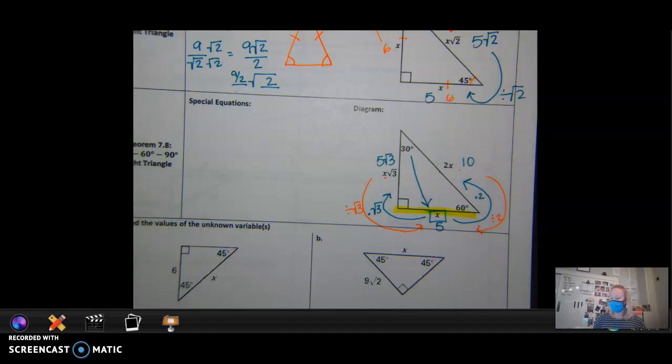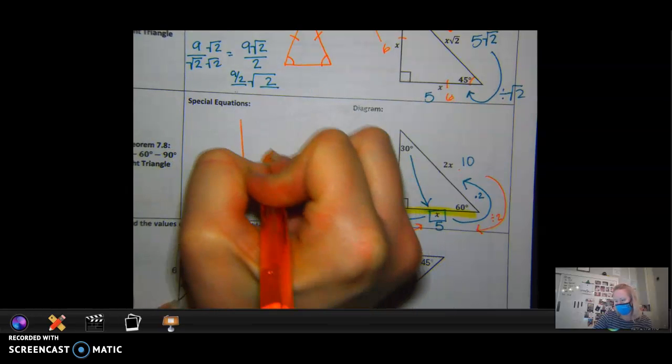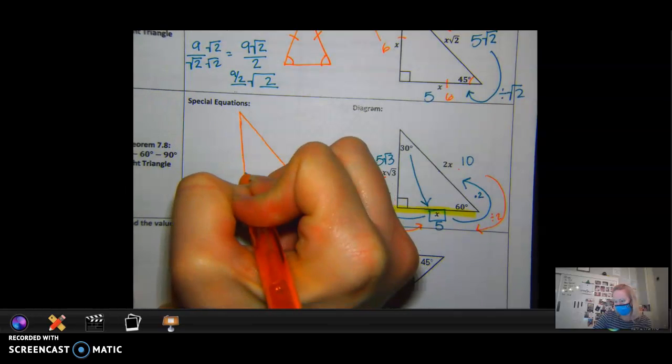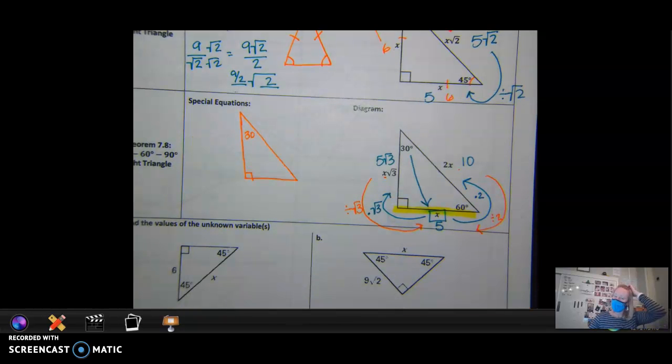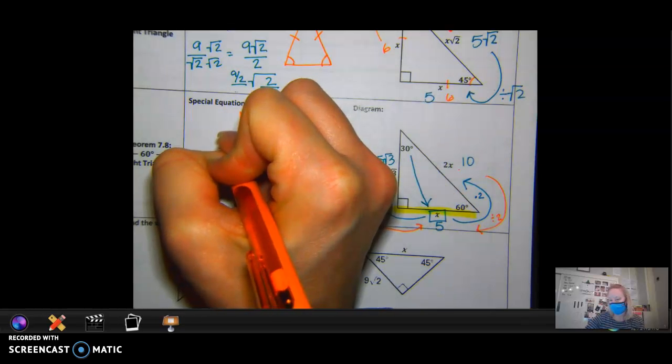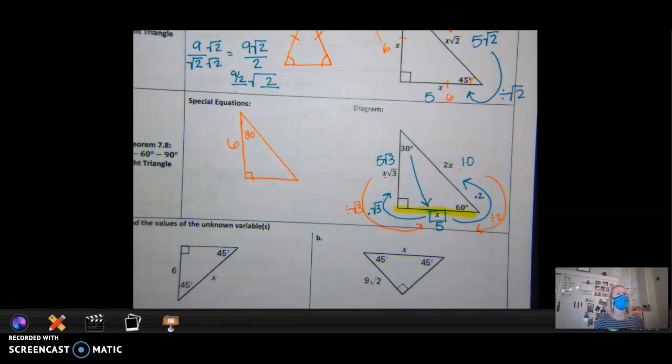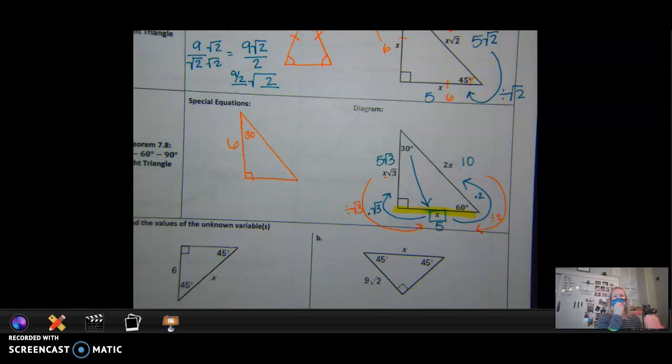The first two... Actually, we're going to try one. So 30-60-90 triangle. I'm going to tell you that this side is... Actually, I'm going to give you this one. This side is 6. See if you can find your short side. And then after you've found your short side, see if you can find your hypotenuse.